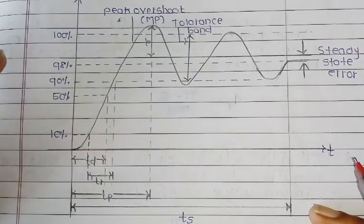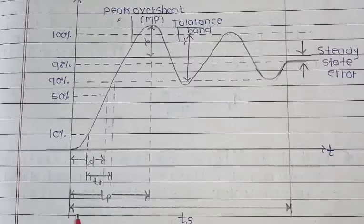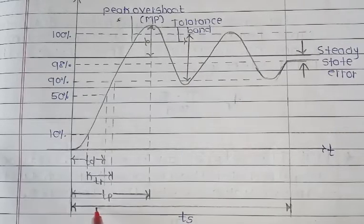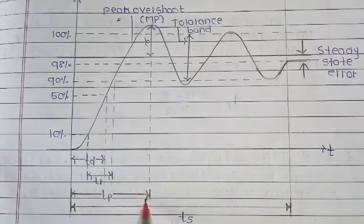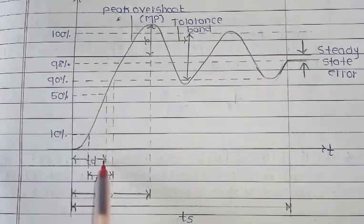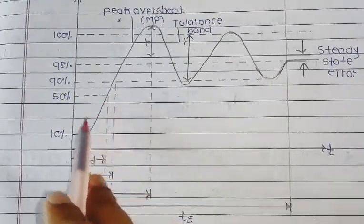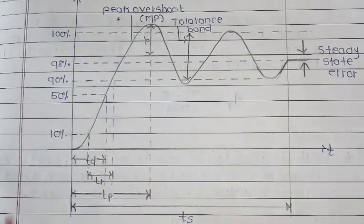The first parameter is delay time, denoted as Td. The definition is: it is defined as the time required for the response to reach 50% of the final value in the first attempt. That is the delay time — 50% of the final value in the first attempt.